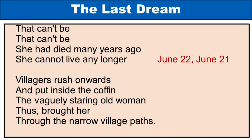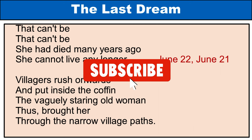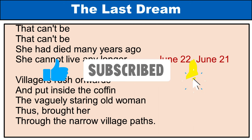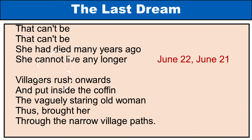Poem lines: 'That can't be. That can't be. She had died many years ago. She cannot live any longer. Villagers rush onwards and put inside the coffin the vaguely staring old woman. Thus, brought her through the narrow village paths.' Explanation: The repetition of 'That can't be' indicates the villagers' disbelief and confusion. The villagers are in disbelief because they thought she had died a long time ago and cannot live any more. They rush ahead and bring the staring old woman back to her former home in a coffin.